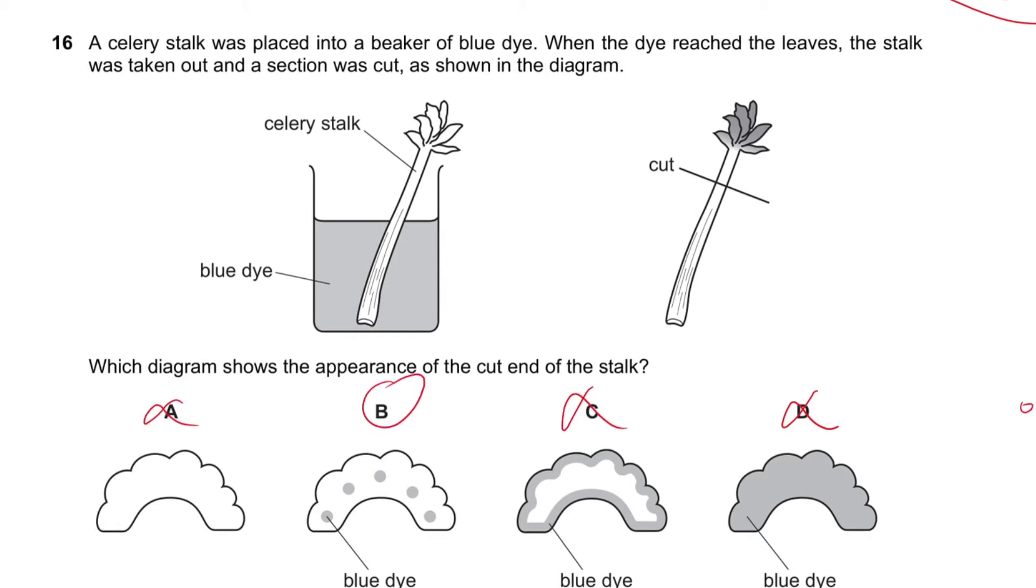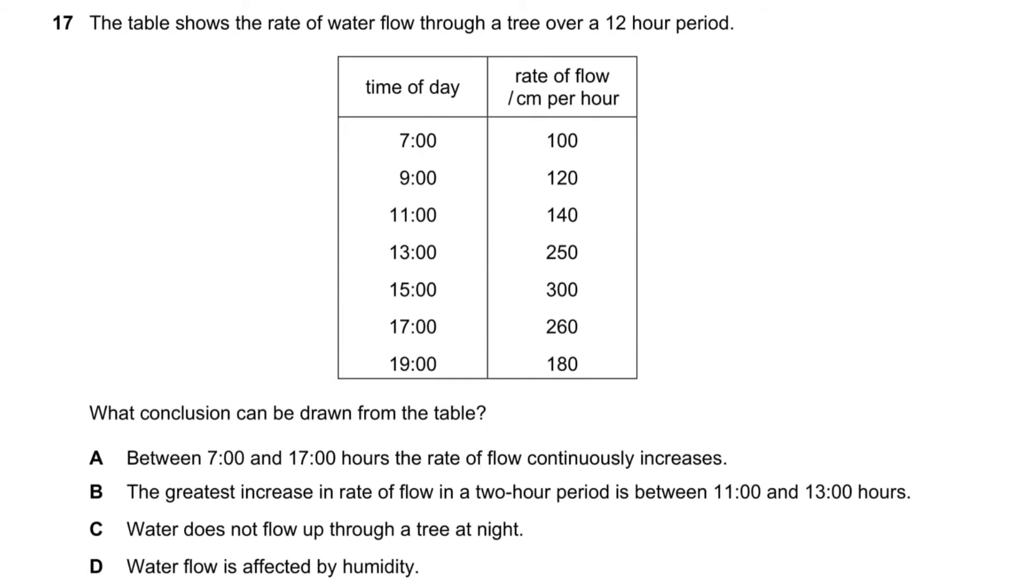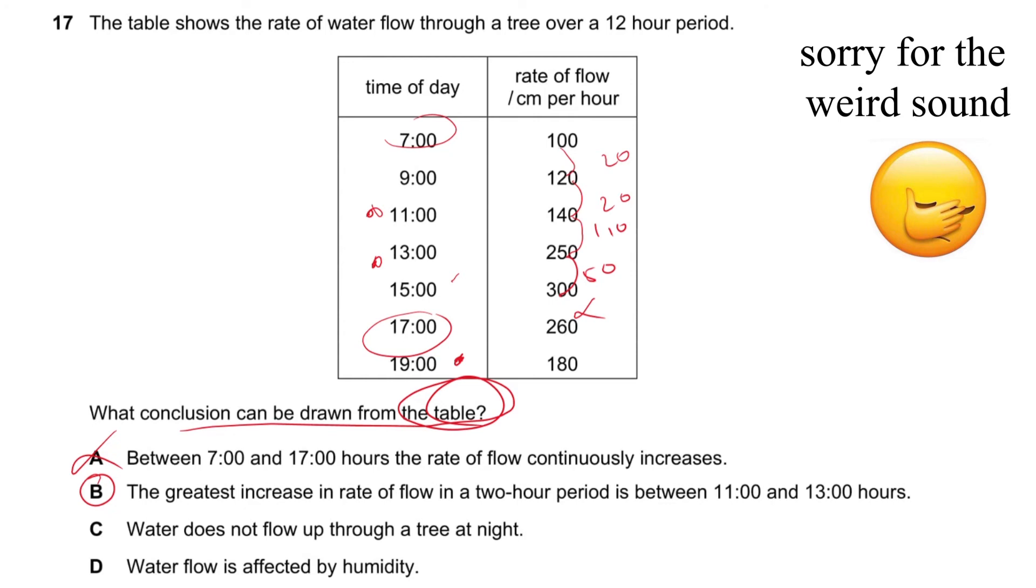Question 17 says the table shows the rate of water flow through a tree over a 12 hour period. What conclusion can be drawn from the table? Between 7 and 17 hours the rate of transpiration is continuously increasing, increases, increases, increases. Now the greatest increase in rate of flow in a two-hour period is between 11 and 13, here's 20, 110 to 50. Water flow is affected by humidity. It didn't show humidity at any point in this table. It is affected by humidity, but what conclusion can be drawn from the table? So A.